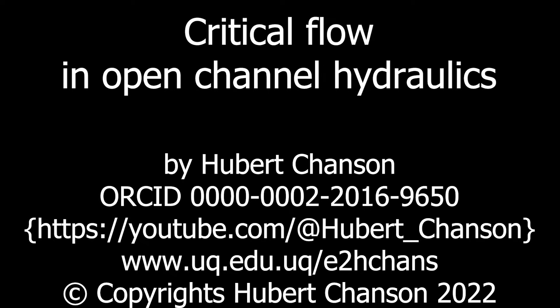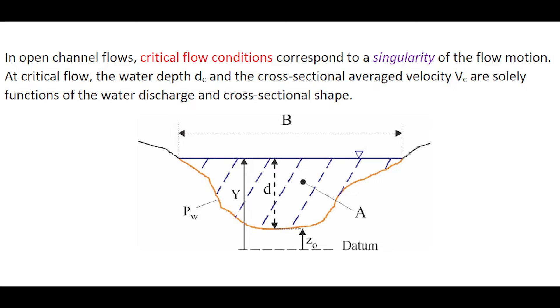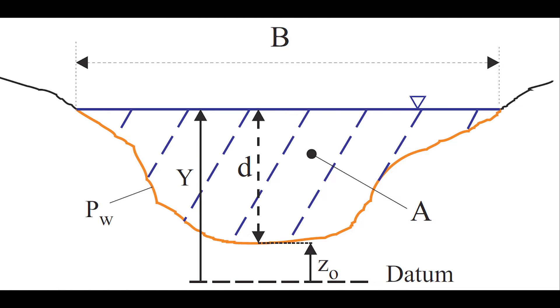This talk is about critical flow conditions in open channels. In open channel flow, critical flow conditions correspond to a singularity of the flow motion. At critical flow, the water depth and cross-sectional average velocity are solely a function of the water discharge and cross-sectional shape.